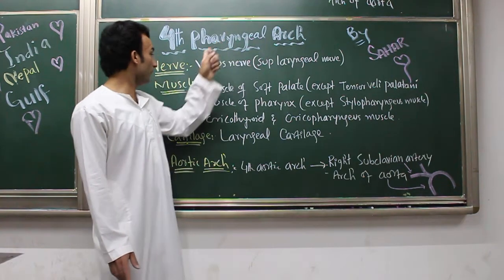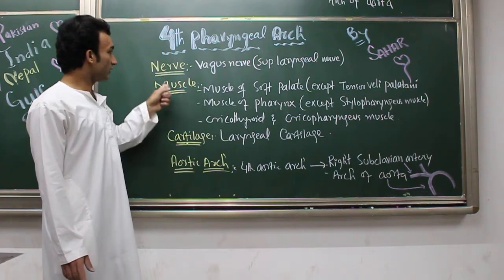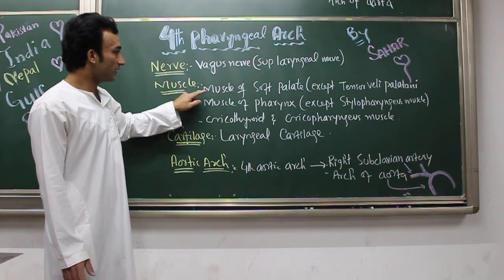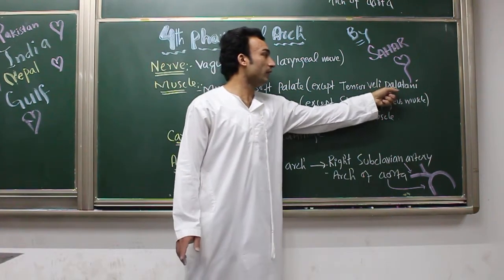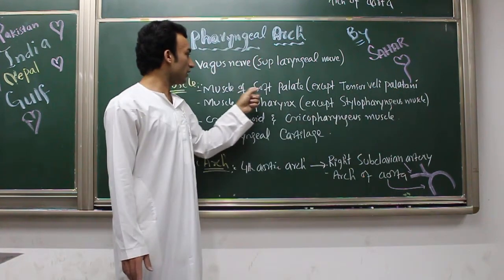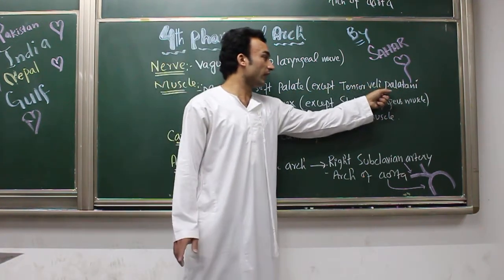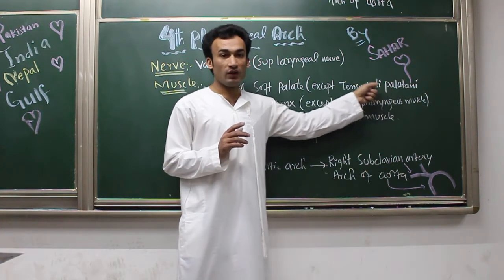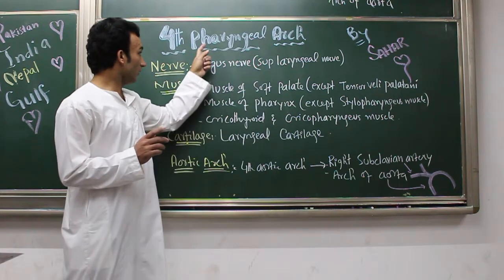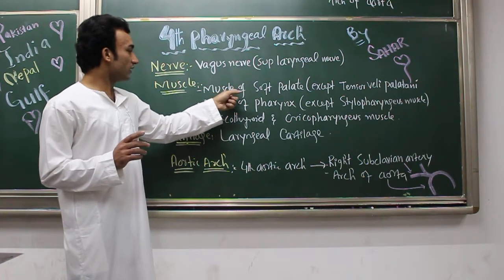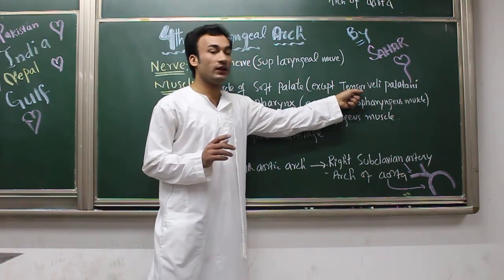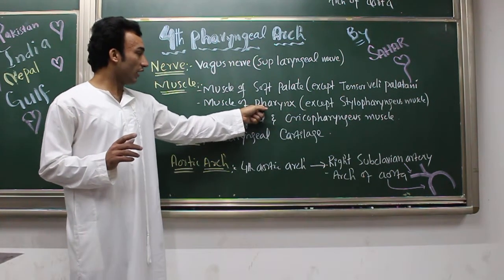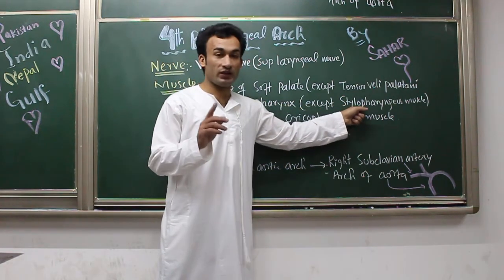Now the muscles derived from the fourth pharyngeal arch are: the muscles of the soft palate, except tensor veli palatini, and the muscles of the pharynx, except the stylopharyngeus muscle. You can refer to later books for the full list of soft palate muscles, but remember for the fourth pharyngeal arch — muscles of the soft palate except tensor veli palatini, and muscles of the pharynx except stylopharyngeus.